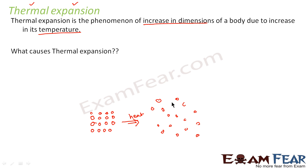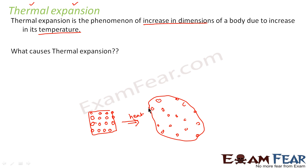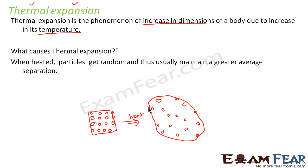As a result, when you see that entire object as a whole, it seems as if the object expanded — the object increased in its size. So the simple answer is: when heated, particles get random and thus usually maintain a greater average separation.